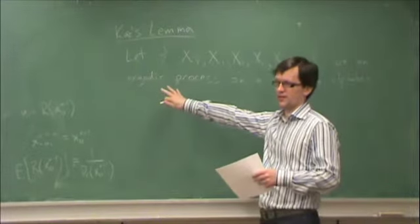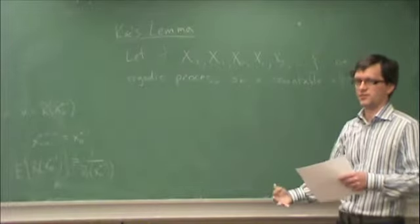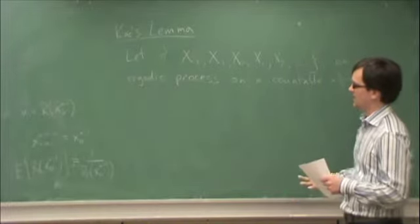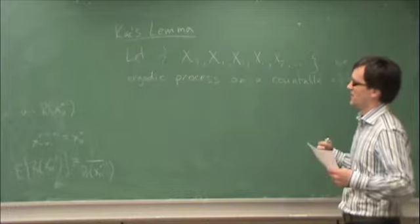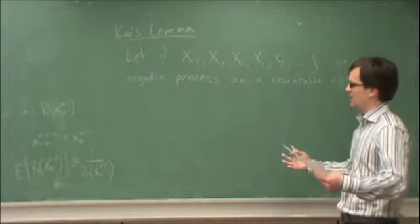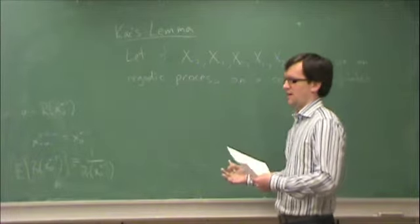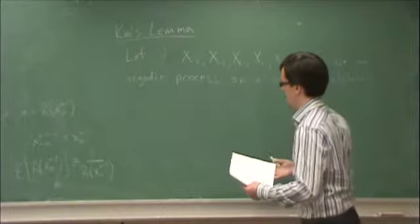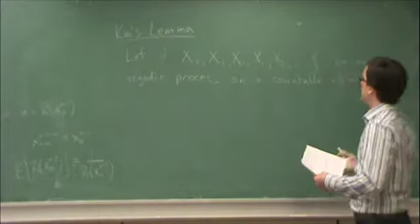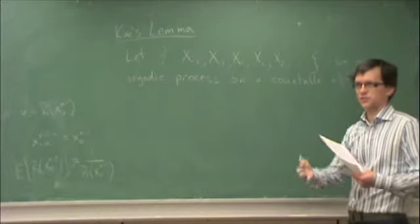That basically means the time behavior of the random process is equivalent to the ensemble behavior. So over time you expect to observe all of the possible behaviors of the process in the same probabilities as given by the probability density function. So in other words, the process doesn't get stuck anywhere. Countable alphabet, I assume everybody knows what countable means.